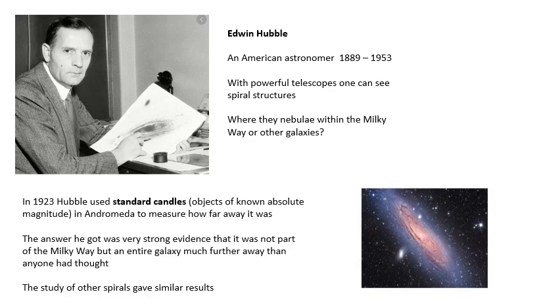What Hubble did was he used standard candles. Remember I mentioned this in another video, it's an object that we know its absolute magnitude. The one that we talked about was the type 1a supernova. Make sure you can explain what that is. But when that supernova happens, we know its absolute magnitude. And if we know its absolute magnitude we can work out how far away it is using the equation.